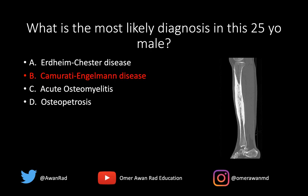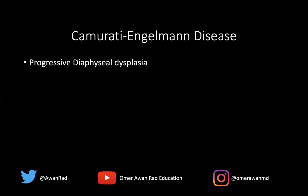This, of course, is a case of Camurati-Engelmann disease. We have diffuse cortical thickening along the diaphysis of a long bone. It extends somewhat to the metadiaphysis but not really — it spares the epiphysis. There's also a little bit of intramedullary sclerosis. A really nice presentation of Camurati-Engelmann disease, or progressive diaphyseal dysplasia, which is what it's usually called. This occurs in very young individuals, typically patients less than 30 years old.